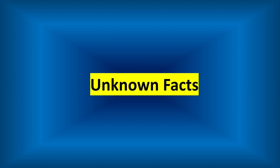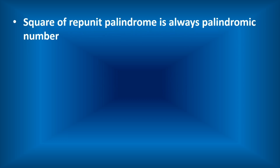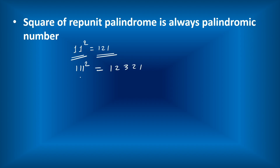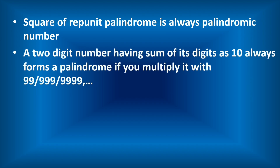An interesting unknown fact: the square of a repunit palindrome is always a palindromic number. For example, 11² = 121, 111² = 12321, and 1111² = 1234321. This pattern continues and always forms a palindromic number.